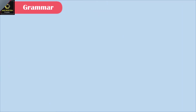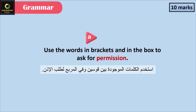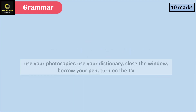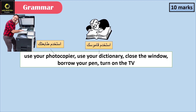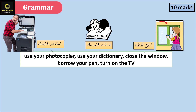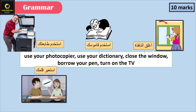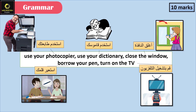Now let's move on to grammar, Question A. Use the words in brackets and in the box to ask for permission. The options are: use your photocopier, use your dictionary, close the window, borrow your pen, turn on the TV.